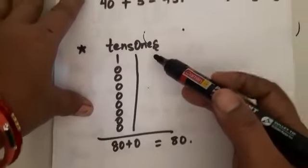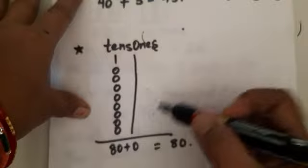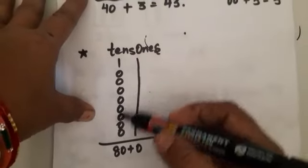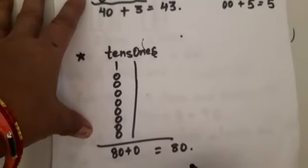Similarly, in ones place having no bits and in tens place having 8 bits. So, 80 plus 0 is equal to 80.